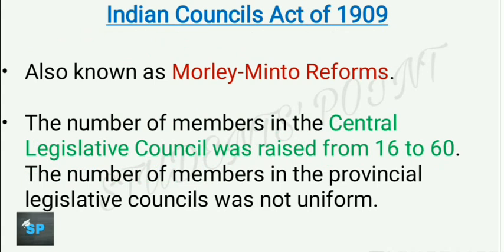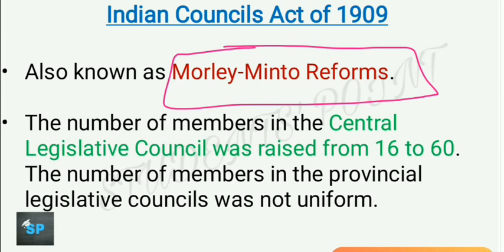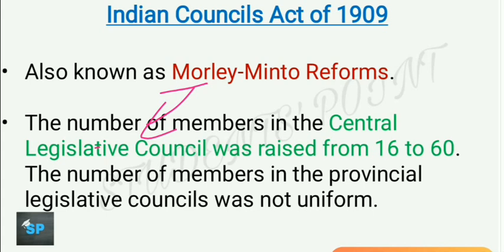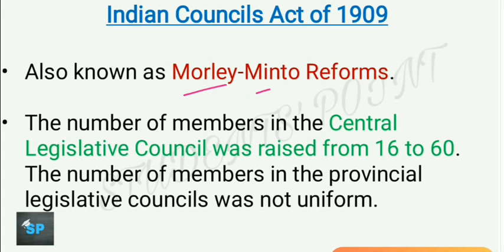Now let's move to the Indian Councils Act of 1909, also called the Morley-Minto reforms. It was named after Morley, who was the then Secretary of State for India, and Lord Minto, who was the then Viceroy of India. The number of members in the Central Legislative Council was raised from 16 to 60 by this act.